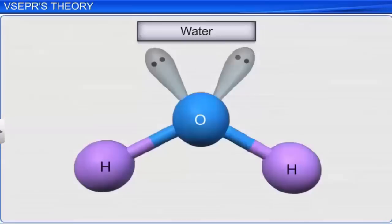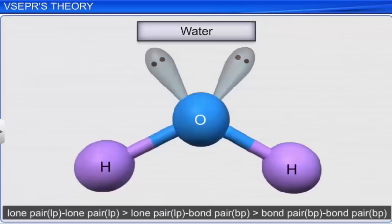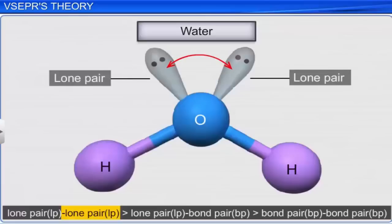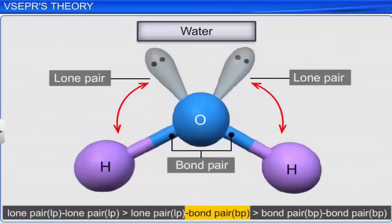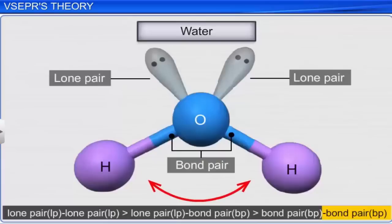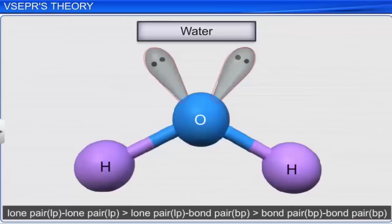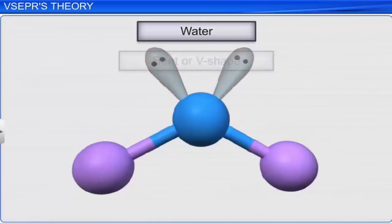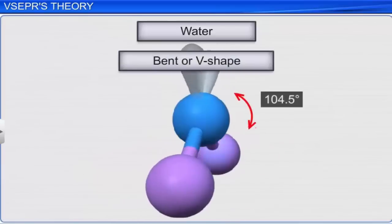In a water molecule, the central oxygen atom has two bonded pairs of electrons and two lone pairs of electrons. The repulsion between lone pair–lone pair and lone pair–bond pair is more than bond pair–bond pair. Thus, the two lone pairs on the central oxygen atom make the molecule distort from its regular geometry to a bent or V-shape, making a bond angle of 104.5 degrees.